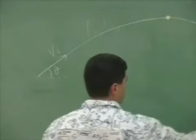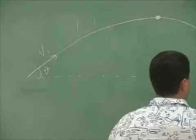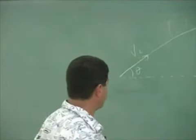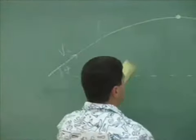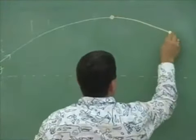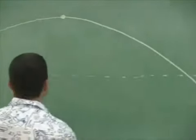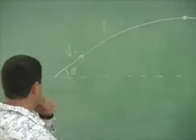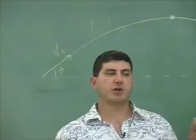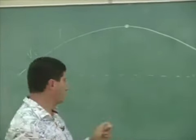The object may fall below the height from which you threw it. What we usually want to do for projectile motion is break the initial velocity into its x component and y component.